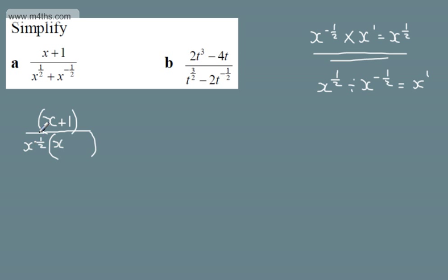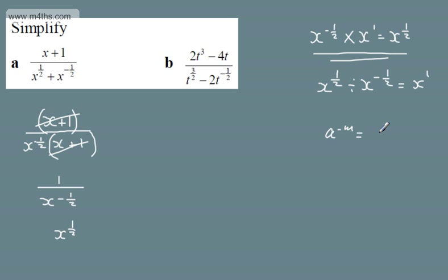Then I say to myself, what do I multiply x to the minus 1 half by to get positive x to the minus 1 half? The answer is just plus 1. We can see now that these factors cancel, so we have 1 over x to the minus 1 half. This is 1 over 1 over x to the half, which gives us x to the half. If we consider a to the power of minus m, that is 1 over a to the power of m. Therefore, 1 over a to the power of minus m is a to the power of positive m, and that's exactly what I've used just here.